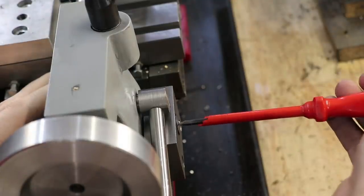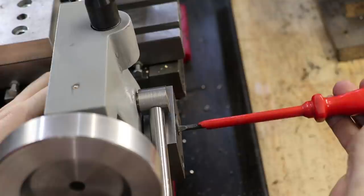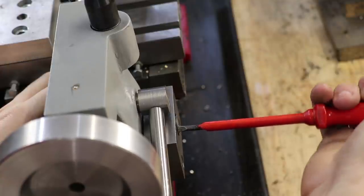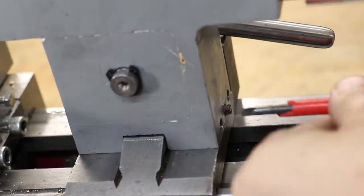Speaking of which adjusting it is also really easy. What I'll do is I'll take a slotted screwdriver and I'll use it to bring the tailstock into alignment. I'll then use those two screws to lock the tailstock in place.